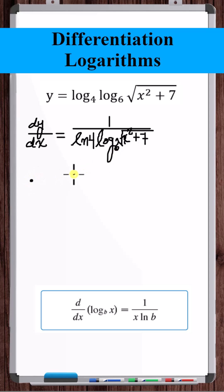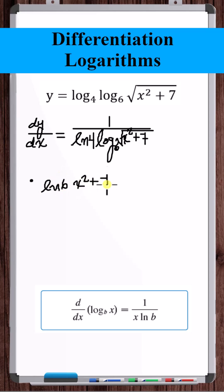Chain rule again — we have the log base 6 of something. The derivative of log base 6 of something is 1 over the natural log of the base times that something, times the derivative of that something.